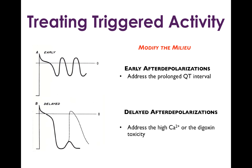Treating triggered activity — even though it would be elegant to address the underlying calcium channel abnormalities — in practice, that's not actually how we deal with triggered activity. Rather than directly addressing the calcium handling abnormalities, what we do is modify the electrophysiological milieu that allows these calcium abnormalities to manifest. For early after-depolarizations, which depend on a long QT interval, we address the prolonged QT interval and do things to shorten it. To address delayed after-depolarizations, which are often dependent on high intracellular calcium levels associated with digoxin toxicity, we fix the digoxin toxicity to remove the potential for these delayed after-depolarizations to occur. So in treating triggered activity, we try to modify the electrophysiologic milieu.